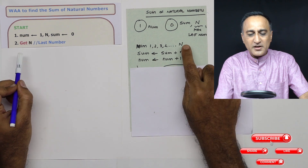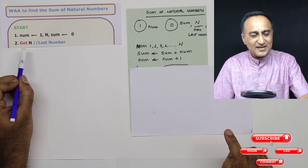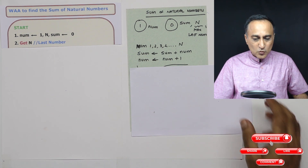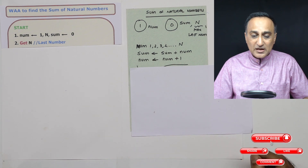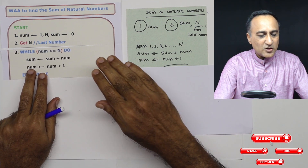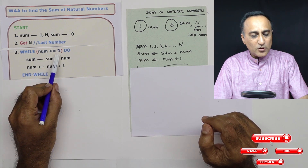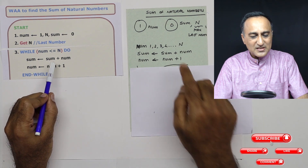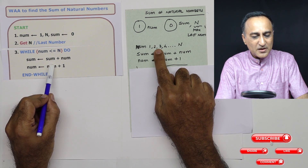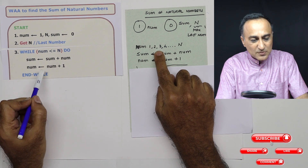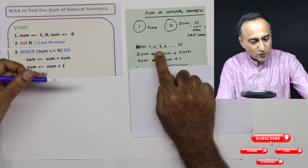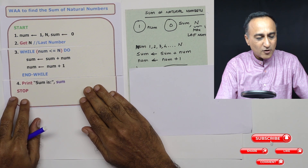To find the sum, I only need to get n from the user — get n, read n, scan — they all mean the same. Till this n, I need to keep adding the number. As long as number is less than or equal to n, sum is sum plus number. Then number is increased by 1 so it goes to 2, then the old sum plus 2 is added, then number becomes 3. This keeps going until number exceeds n, at which point I print the sum on the screen.